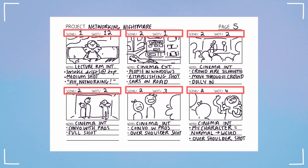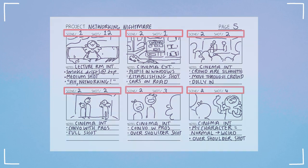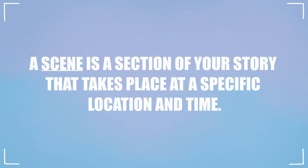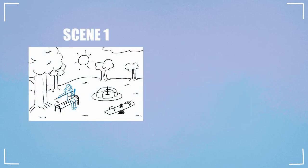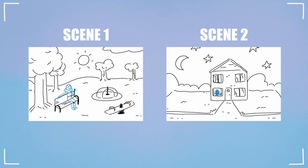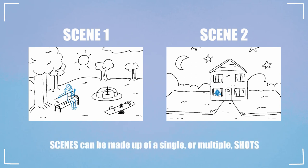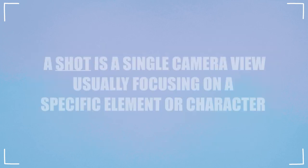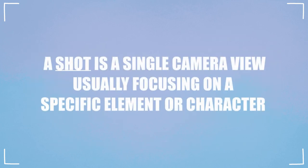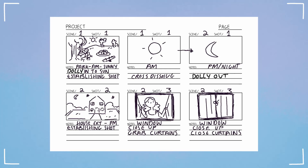Above the panels I have the scene and shot number. A scene is a section of your story that takes place at a specific location and time. If this changes — for example if your character is at a park in the morning and then in the evening they're at home — these would be two separate scenes. Scenes can be made up of single or multiple shots. A shot is a single camera view usually focusing on a specific element or character, and if the camera view changes this would be a new shot.